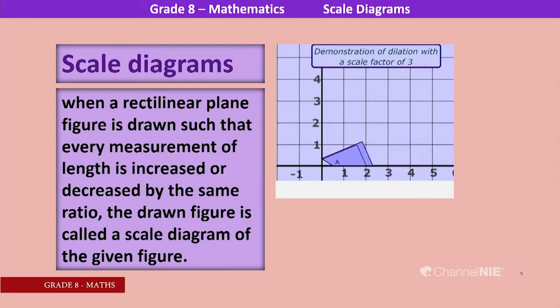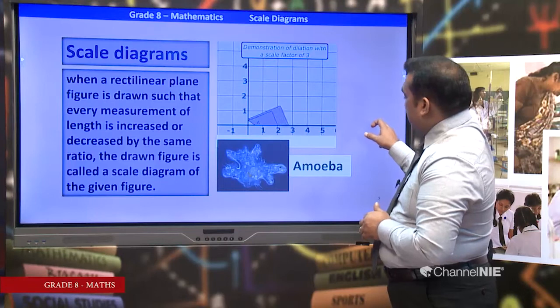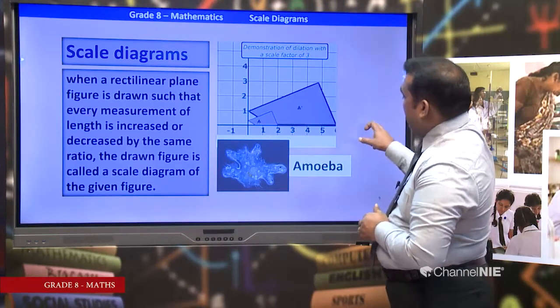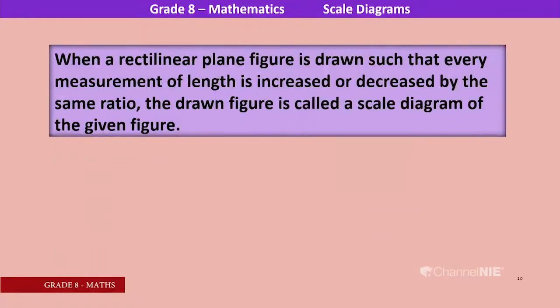Increasing actual measurements — for example, an amoeba. When a rectilinear plane figure is drawn such that every measurement of length is increased or decreased by the same ratio, the drawn figure is called a scale diagram of the given figure.